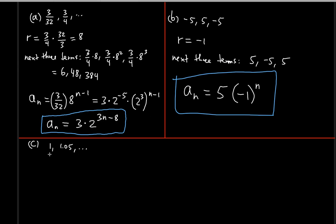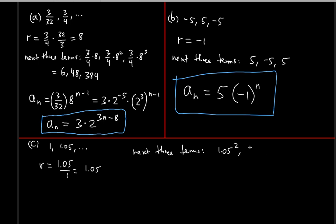For the last sequence, the r value is found by dividing the next term by the preceding term: 1.05 divided by 1 = 1.05. The ratio is confirmed consistent. The next three terms are 1.05², 1.05³, and 1.05⁴, since each term multiplies the preceding one by 1.05.